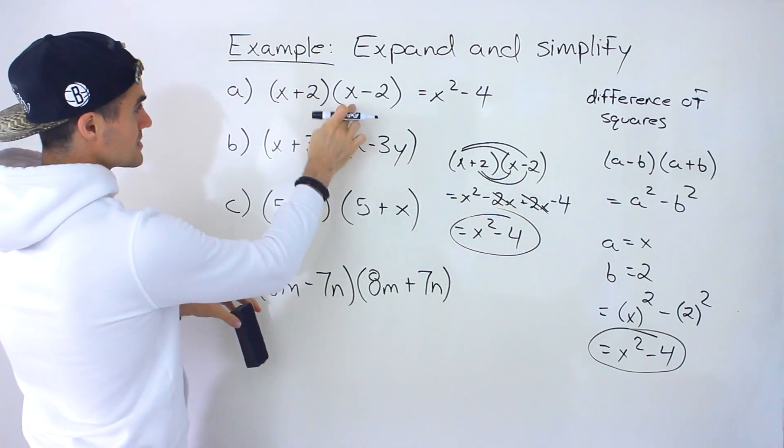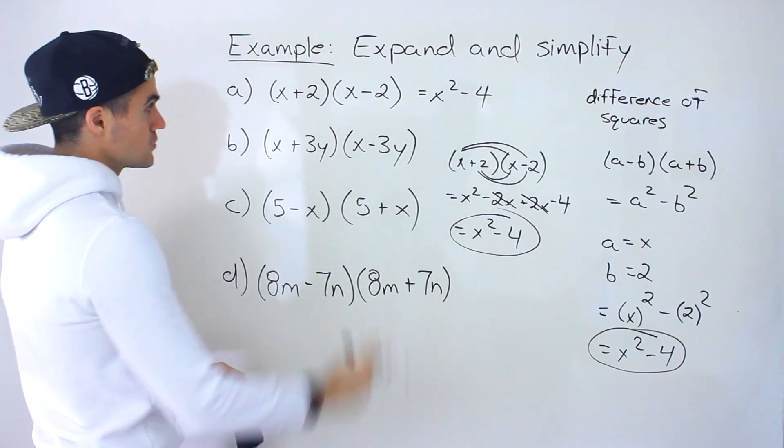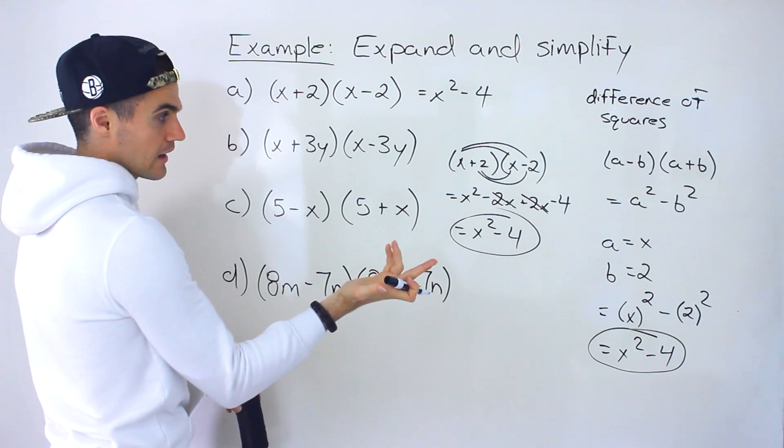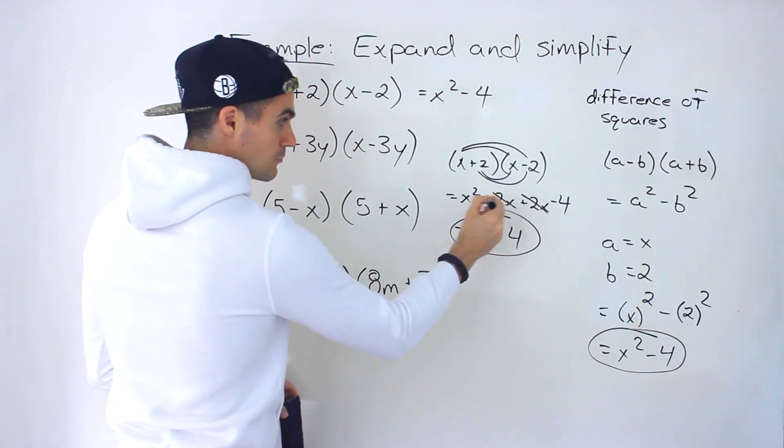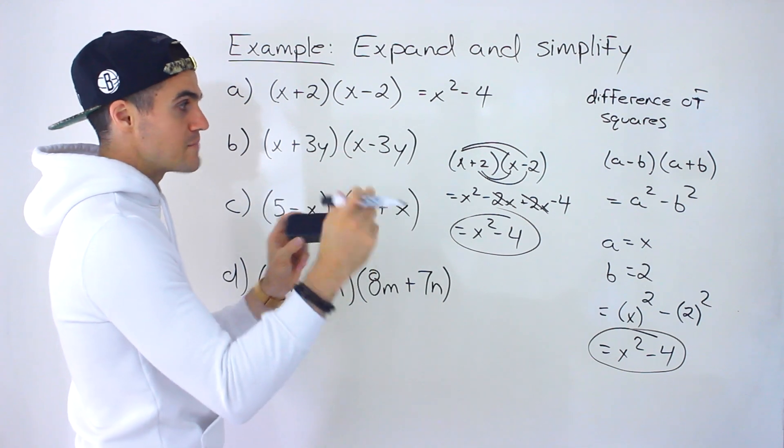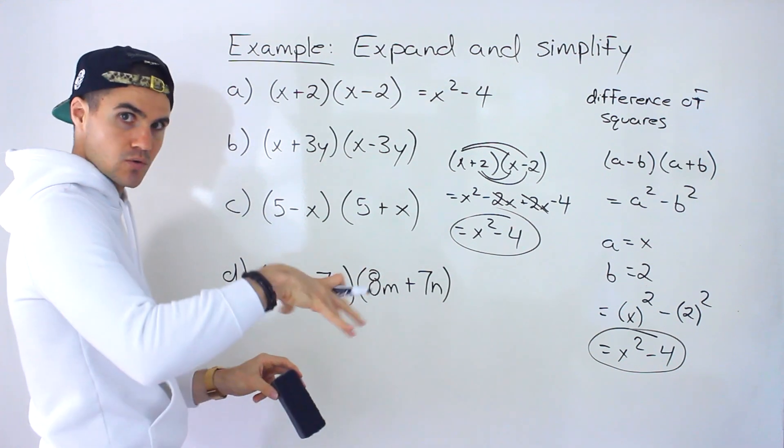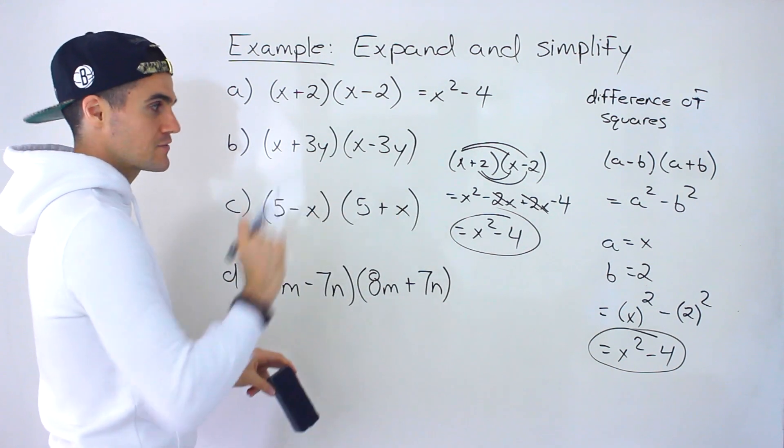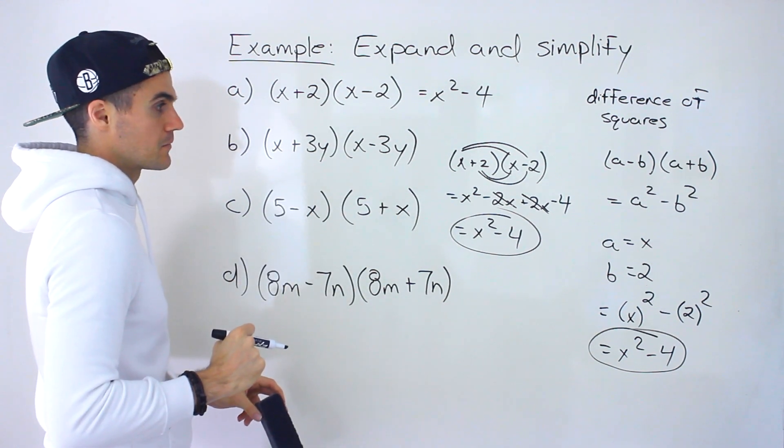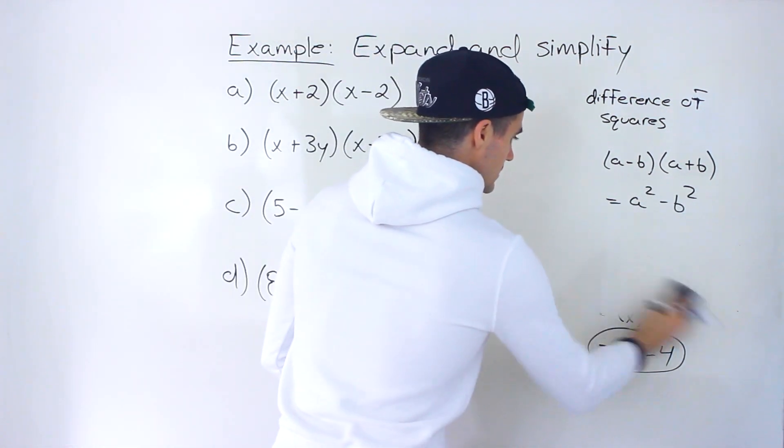You're going to realize that when you get something like this, you actually don't have to fully expand it. You could just take the x's, multiply them, the 2's, multiply them, and make sure there's a negative in between. There's like positive 2 times negative 2. And that negative positive is going to make that middle term or that bx value in the standard form of quadratic, ax squared plus bx plus c, that bx value is going to disappear. All right, so let's do the rest of these.